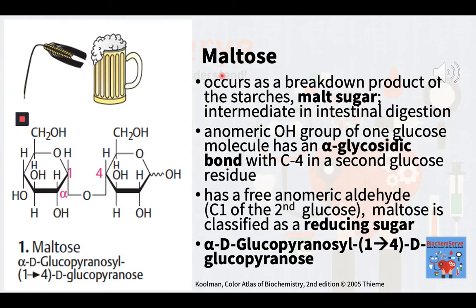Let's now go to the first example of the biomedically significant disaccharides. The first is maltose, the two-unit member of the amylose homologous series, the key structural motif of starch. When beta-amylase breaks down starch, it removes two glucose units at a time, producing maltose, also known as malt sugar. Maltose is also an intermediate in the intestinal digestion of carbohydrates. In maltose, the anomeric O group or C1 of one glucose molecule has an alpha-glycosidic bond with C4 of a second glucose residue. Since there is a free hydroxyl group or anomeric aldehyde group at C1 of the second glucose moiety, maltose is classified as a reducing sugar. The systematic name of maltose is alpha-D-glucopyranosyl-1,4-D-glucopyranose.